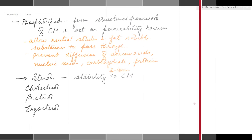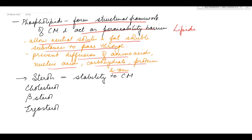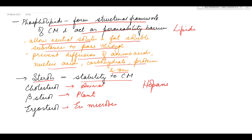Hydrophobic interactions between the nonpolar tails help in the formation of the bilayer. The hydrophobic tails are isolated from the surrounding water while the polar ends interact with the intracellular and extracellular surroundings. Phospholipids form the structural framework of the cell membrane and act as permeability barriers, allowing only neutral solutes and fat-soluble substances to pass through while preventing diffusion of amino acids, nucleic acids, carbohydrates, proteins, and ions. Besides phospholipids, sterols are also present — cholesterol in animal membranes, beta-sterol in plant membranes, ergosterol in eukaryotic microbes, and hopanoids in bacteria.